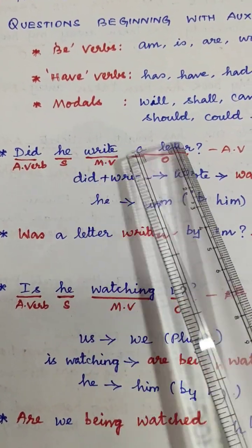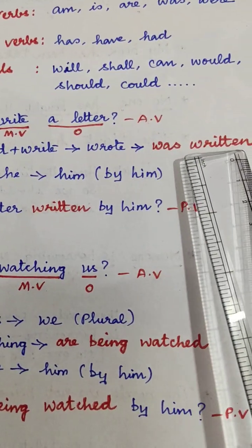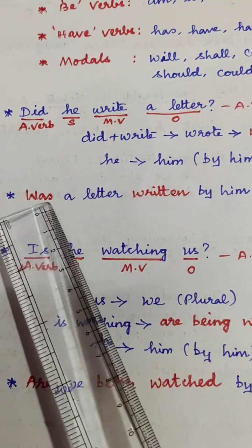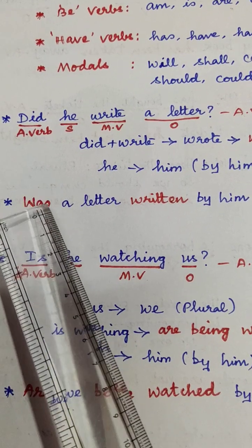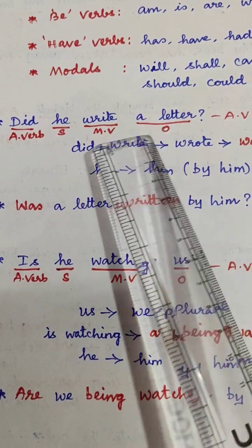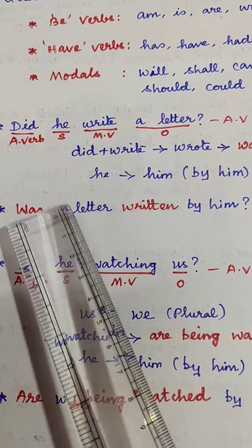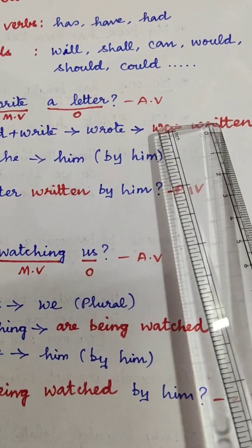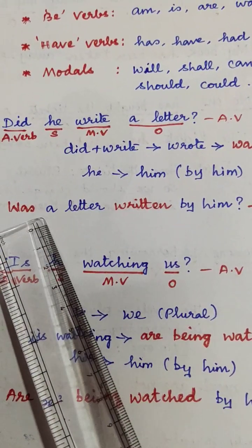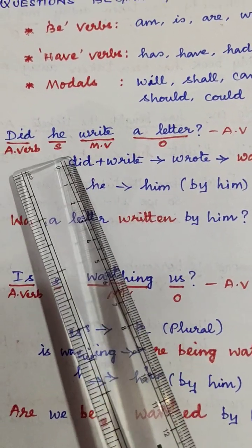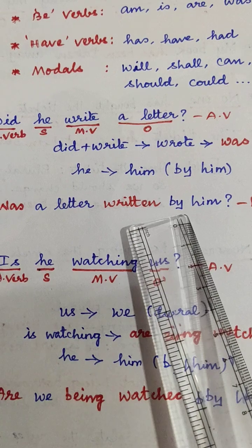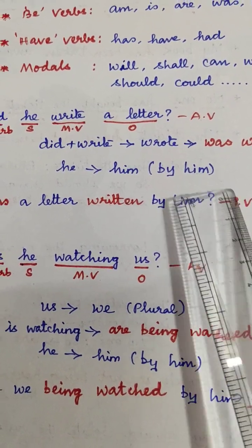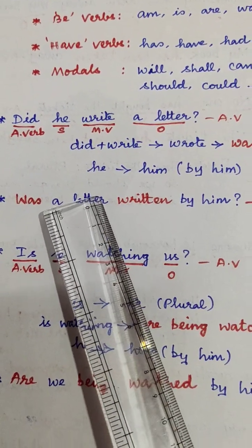'Did he write a letter?' — the auxiliary verb 'did' changes to 'was', and 'write' becomes 'written'. So 'a letter was written by him' — that is the passive voice.